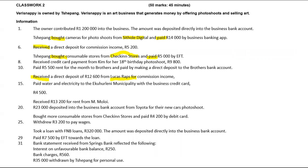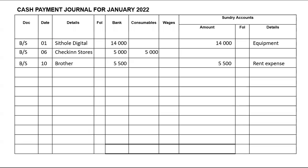We paid water and electricity to Ecorlini Municipality with a business credit card — 4,500. Since we paid, it goes to the cash payments journal. You will have BS and the date will be the 15th — Ecorlini Municipality — bank will have 4,500, and then under sundry because we are paying for water and electricity and we don't have a dedicated column for it.